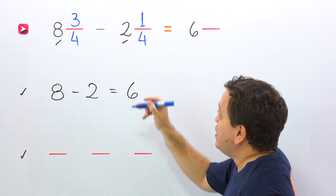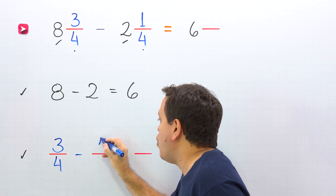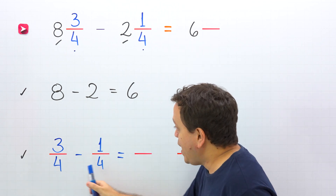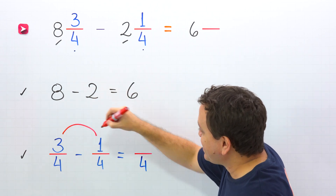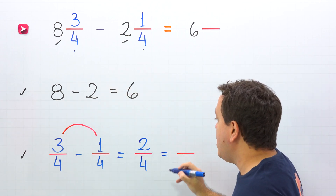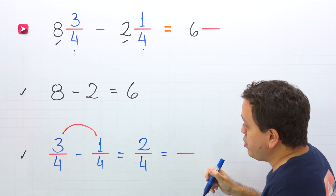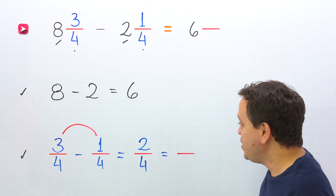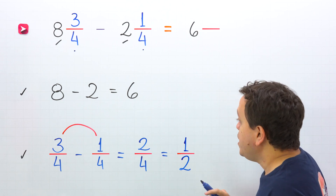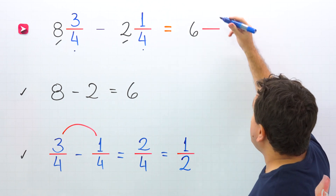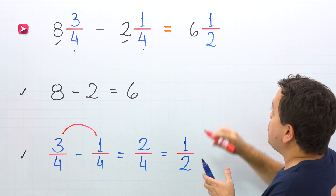It's time to subtract the fractions. The fractions are three-fourths and also one-fourth. So we put three-fourths minus one-fourth. These two fractions have the same denominator — four, four, and four. Now we subtract the numerators and three minus one gives us two. We have two-fourths. However, two-fourths is a fraction that we can simplify. So we're going to simplify this fraction by dividing the numerator and the denominator by two. Two divided by two gives us one, and four divided by two equals two. The difference of the fractions is one-half. Finally, we add one-half to six, so eight and three-fourths minus two and one-fourth gives us six and one-half.